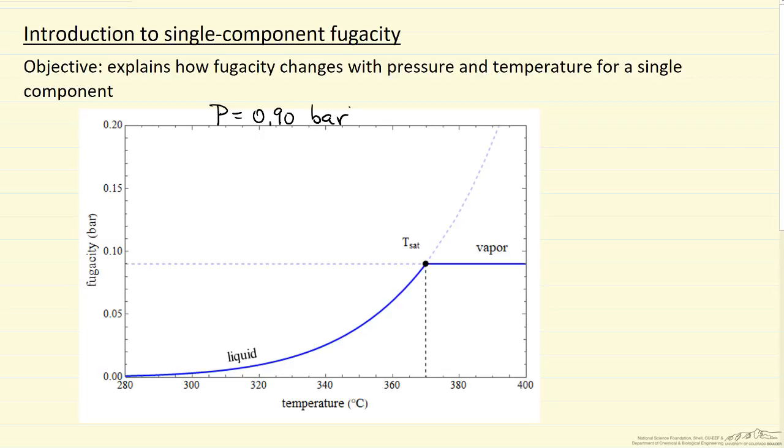So what we see is at low temperatures, the fugacity here is the saturation pressure. This is assuming the gas phase would be ideal, and then at high temperatures where we have a vapor, the fugacity is just the pressure which is 0.90 bar. So the transition of course is at the saturation temperature, and what the diagram is trying to show is that when the liquid has the lower fugacity it's a stable phase.